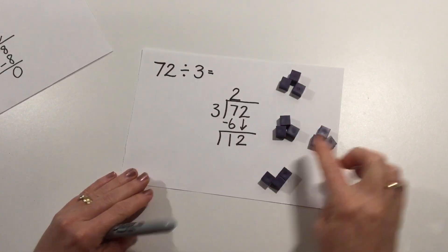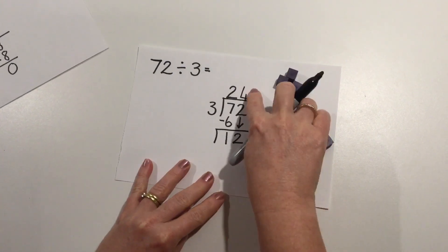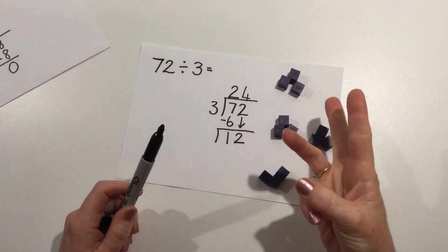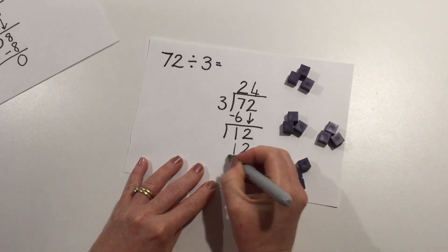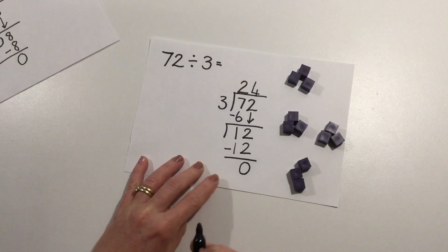I've got 1, 2, 3, 4 groups of 3. 4 times 3: 3, 6, 9, 12. 3, 6, 9, 12 means that I've used up 12 ones and I have none remaining.